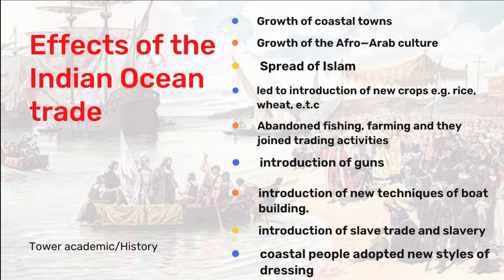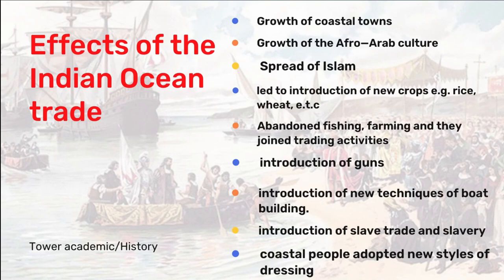Third, the trade led to the spread of Islam along the East African coast. Since Arabs were Muslims, their prolonged presence at the coast resulted in Islam becoming the dominant religion in coastal East Africa to this day. Fourth, it led to the introduction of new crops such as rice and wheat, brought in by Arab and foreign traders, which Africans still enjoy today. Fifth, coastal Africans abandoned fishing and farming and joined trading activities, as trade was booming.